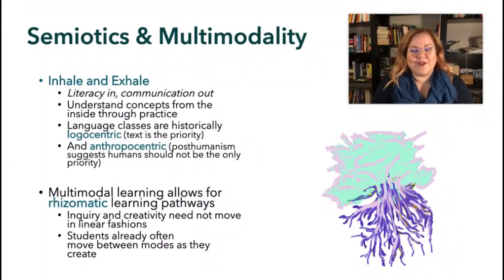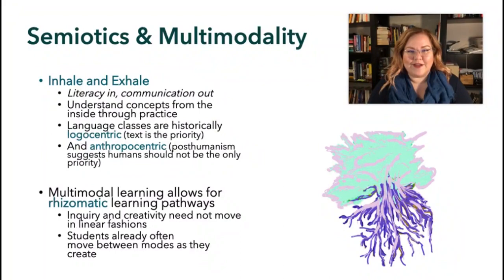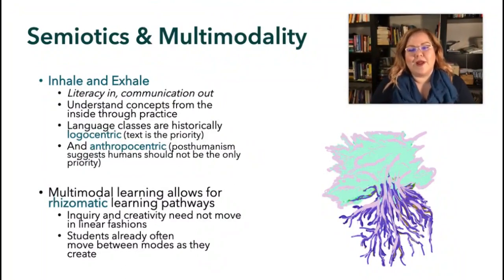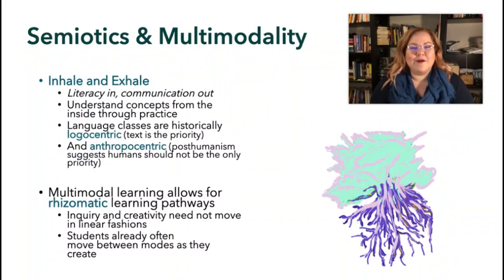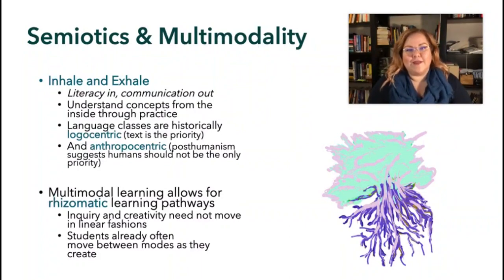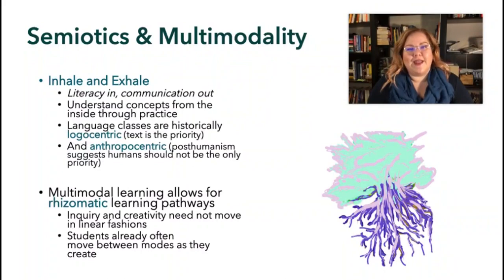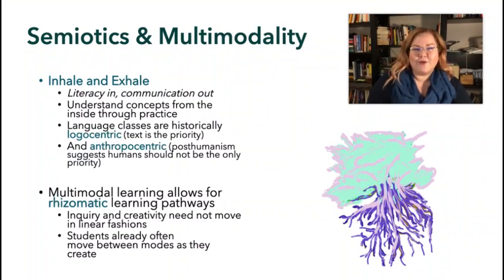A term arose again and again in the literature: rhizome — the rhizomatic structures of learning. It's like a tree with roots and branches, but it doesn't have to grow in one direction. It's not linear; it's organic and can expand, contract, redirect, and move in all different ways. What a perfect metaphor for our English classes and how we might use different modes and multimodal spaces as we transfer ideas between modes of communication.